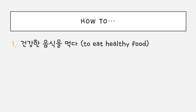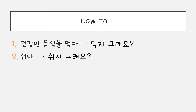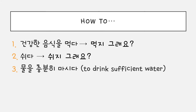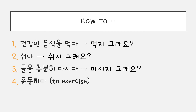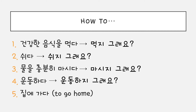Now I'm going to show you how to change these verbs to 지 그래요. You simply attach 지 그래요. For example: 건강한 음식을 먹지 그래요. 쉬다 becomes 쉬지 그래요. 물을 충분히 마시다 becomes 물을 충분히 마시지 그래요. 운동하다 becomes 운동하지 그래요. 집에 가다 becomes 집에 가지 그래요.